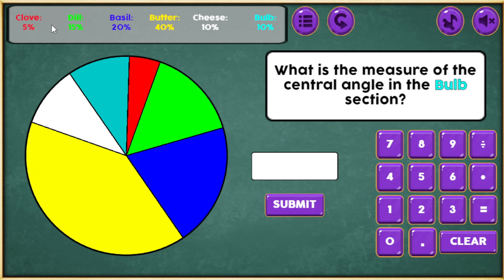So right now you have a pie chart, and you have the various items that make up this pie chart, and it tells you the percentage of each, and they're wanting to know, each question is wanting you to measure, get the measure of the central angle for the various items listed.